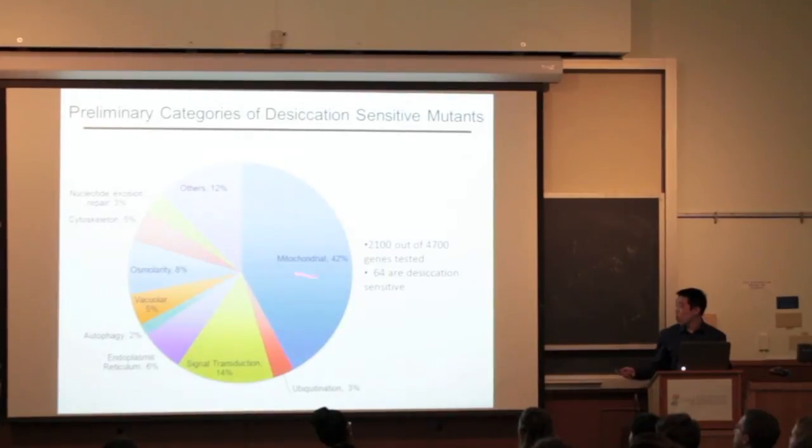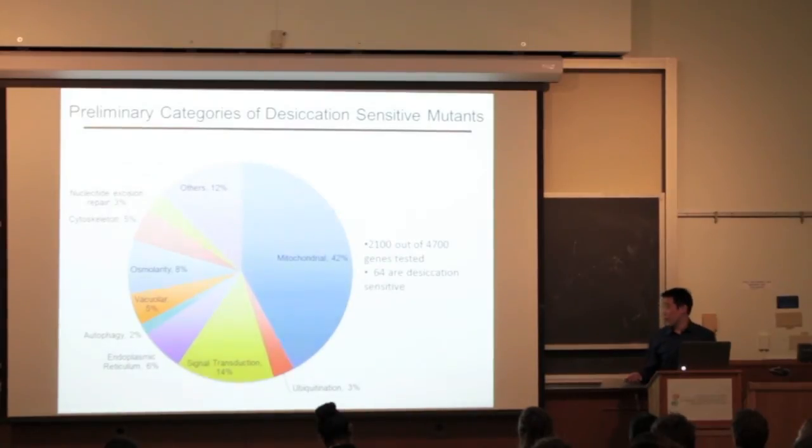As you can see, of the 64 genes, mitochondrial mutants have the most significant effect on desiccation tolerance. Something that I'm elaborating now. However, there were no obvious categories that the other strains fit into. So, to continue, I picked a few genes that seemed interesting for further testing.